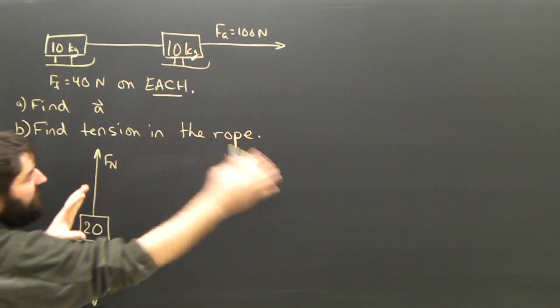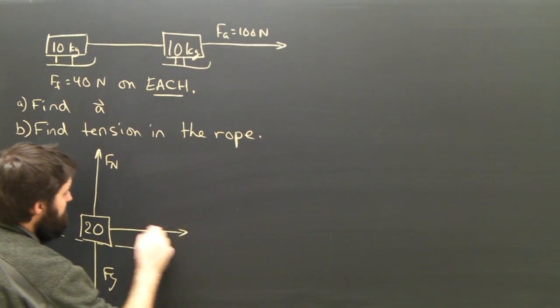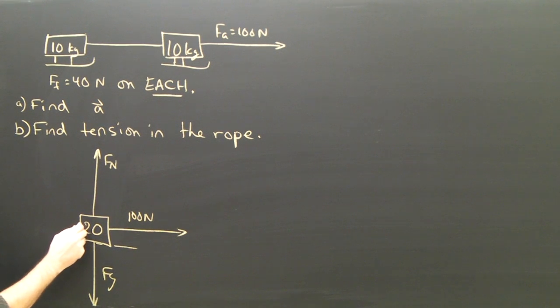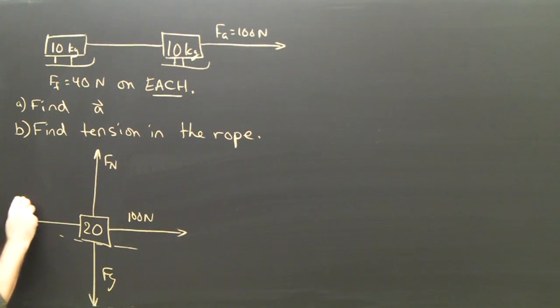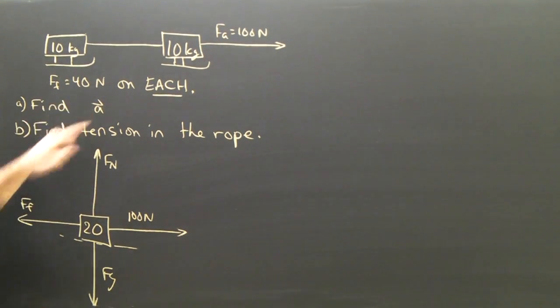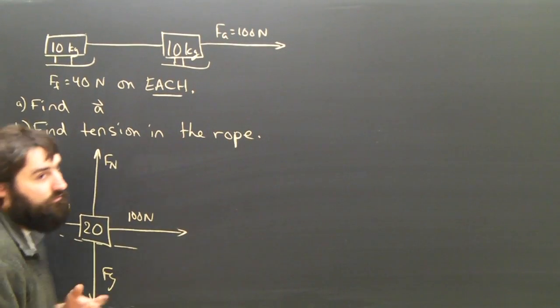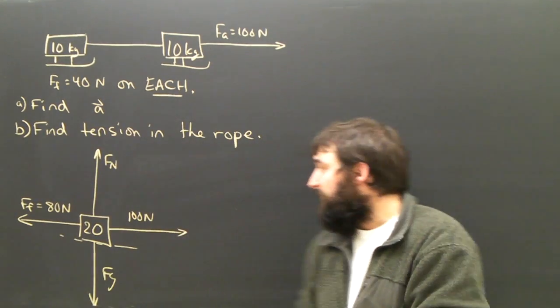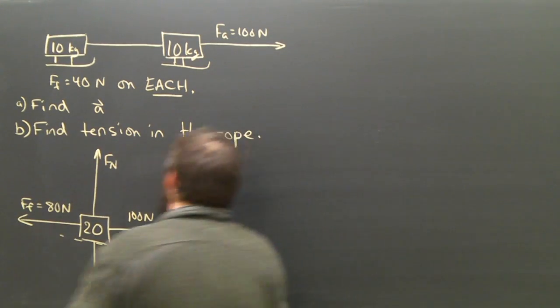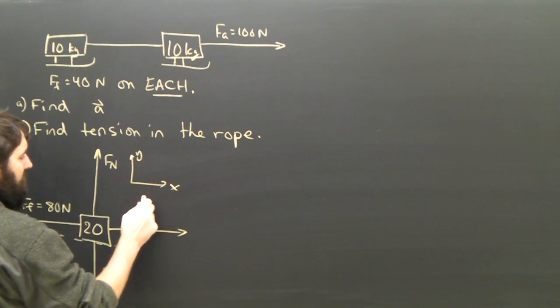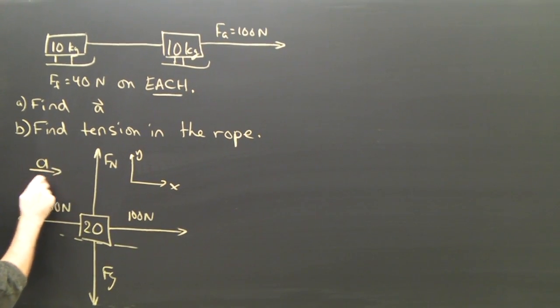External forces: there's an applied force of 100 newtons to the right, and in response to that there is a friction force. And the force of friction is 40 on each, so in the whole system there will, of course, hopefully be 80 newtons of friction. So which way is it accelerating? It's accelerating to the right. I will call that x, up is y, a is to the right.